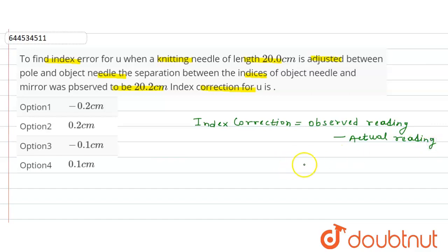So observed reading is how much here? 20.2 minus actual reading is 20. So from here this will be 0.2 centimeter. So index correction will be 0.2 centimeter.